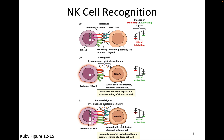If they receive more inhibitory signal than activating signal, then those cells will be inhibited. If they receive more activating signal than inhibitory, they will be activated. When we think about NK recognition, we think about the importance of these receptors and the balance between these two types of signals.